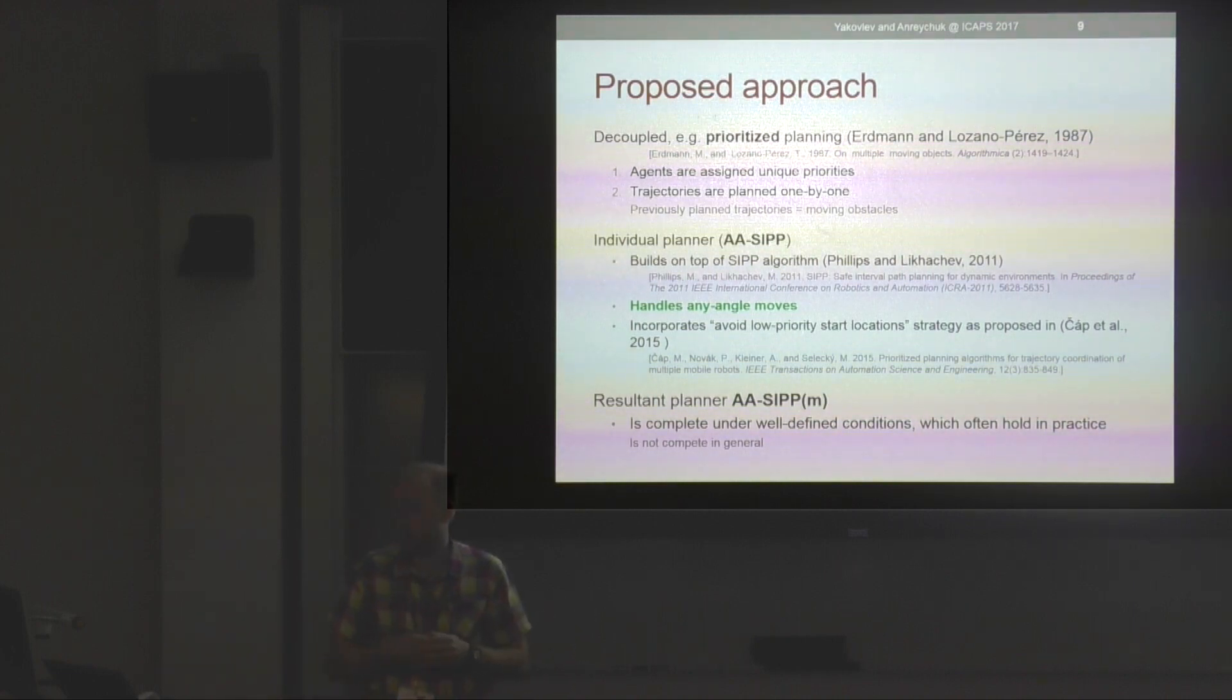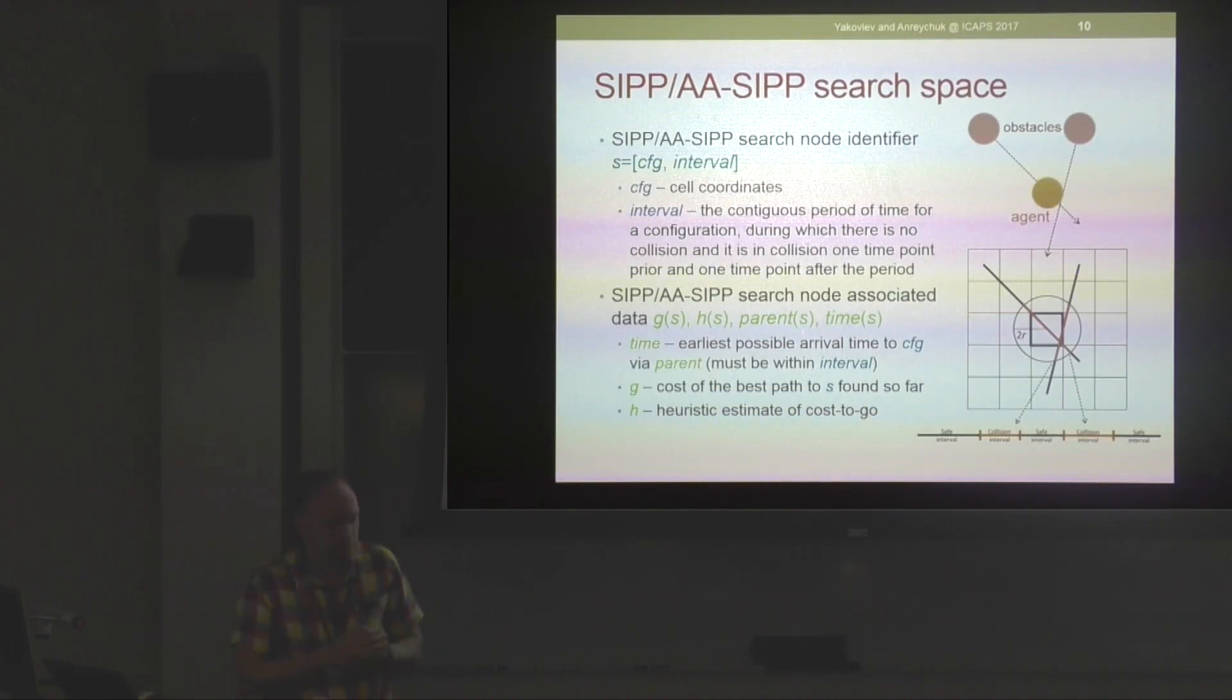Basically, any-angle SIPP, as well as regular SIPP, is a heuristic search algorithm searching a state space populated by nodes, and each node is a tuple: its configuration and safe interval. This is different from static A*. Configuration is the spatial component of the node, just like the cell in our case.